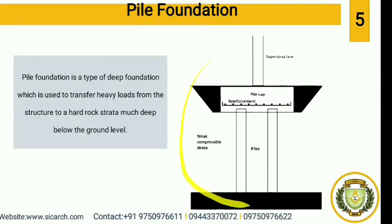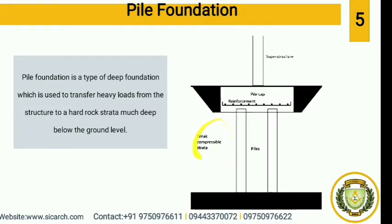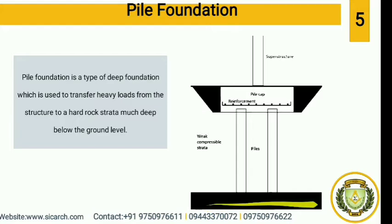Here you can see in the image. We will have a superstructure, which is a structure above the ground level. Below that we have weak compressible soil. When we have this kind of weak compressible soil, a pile will be inserted till the solid rock base.